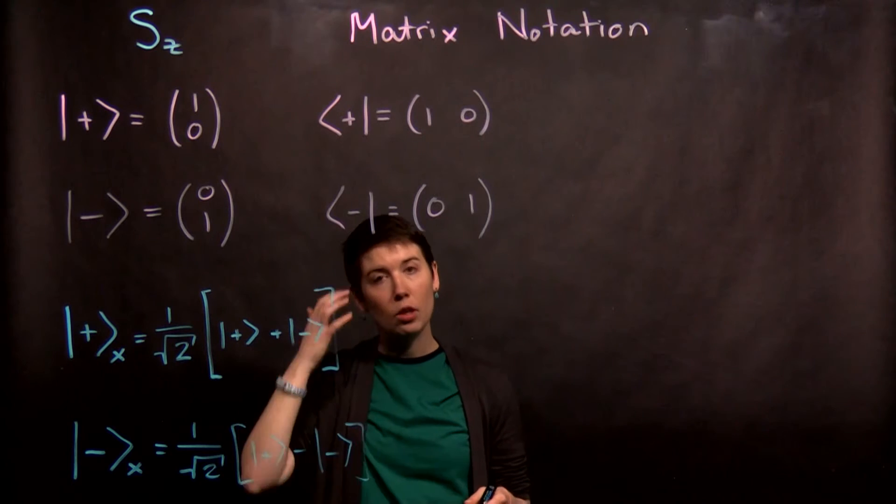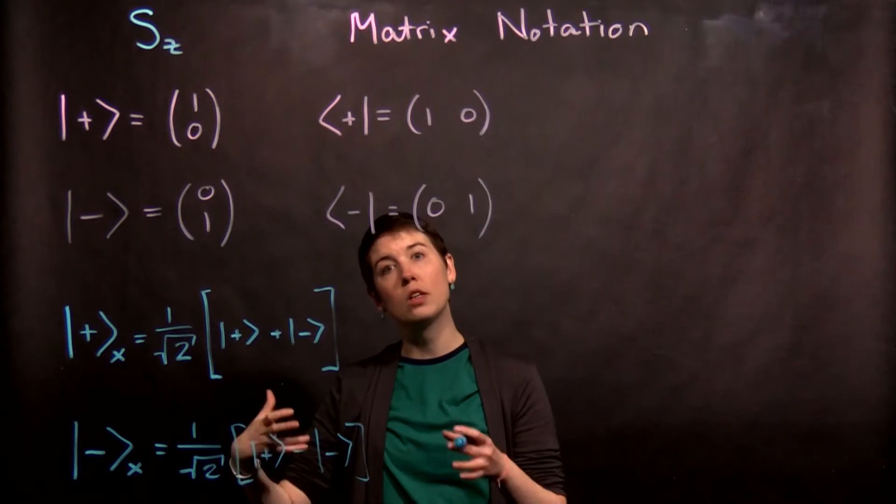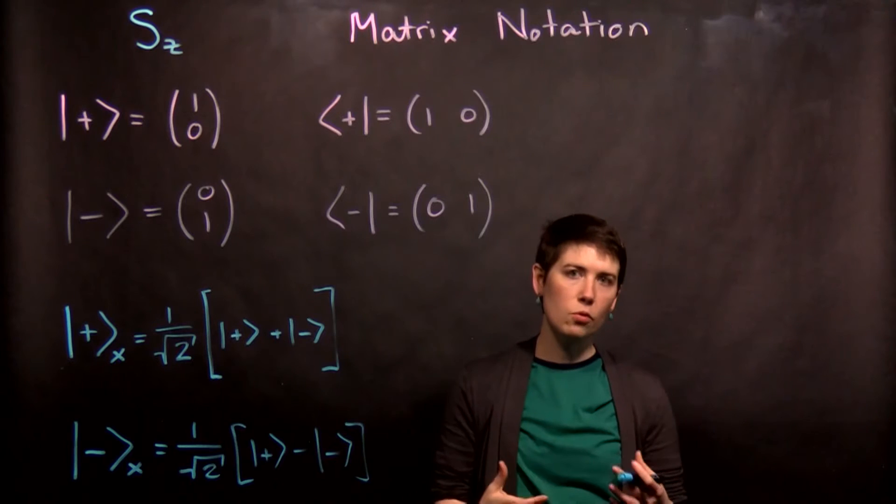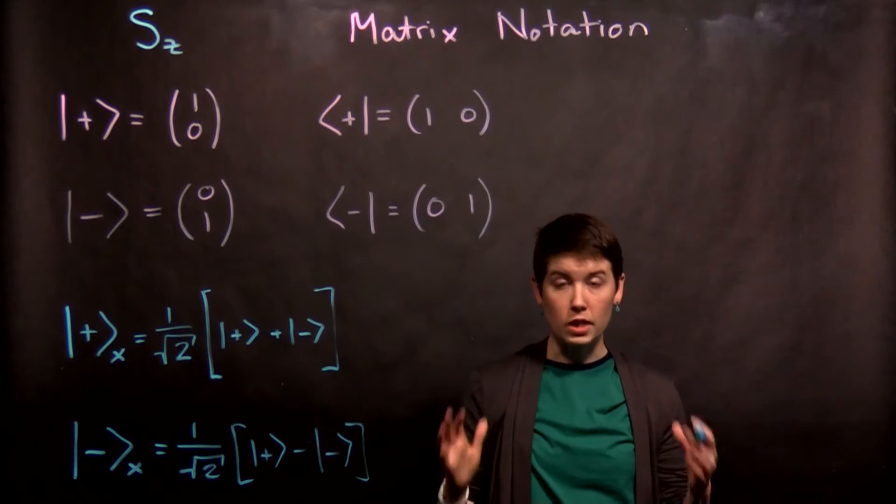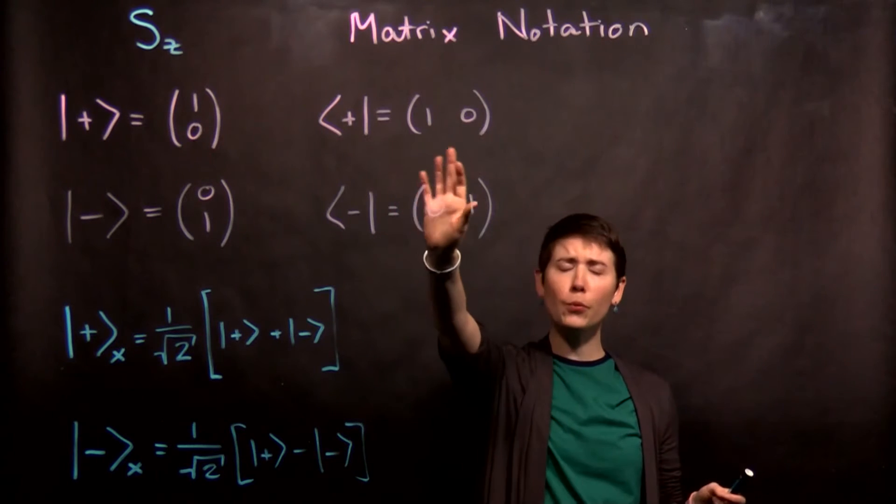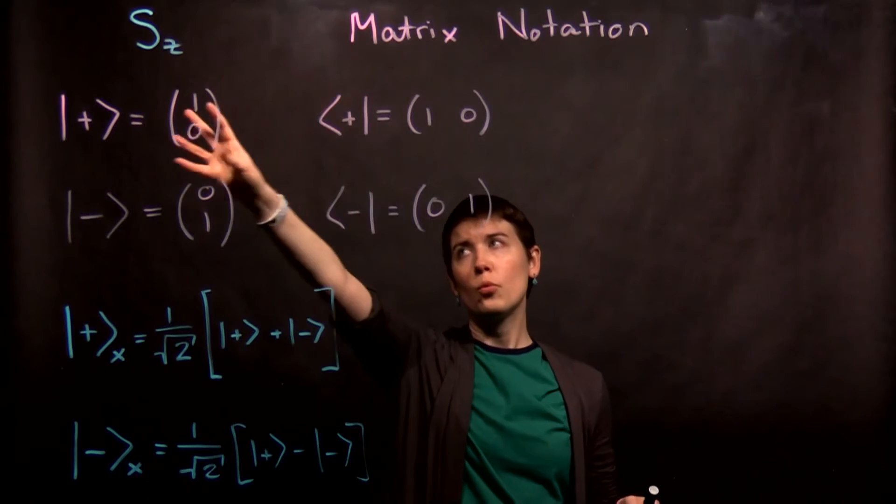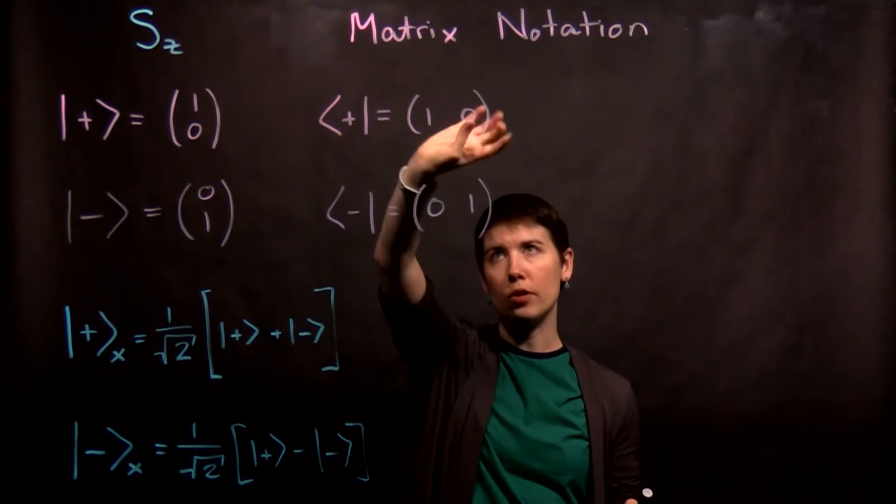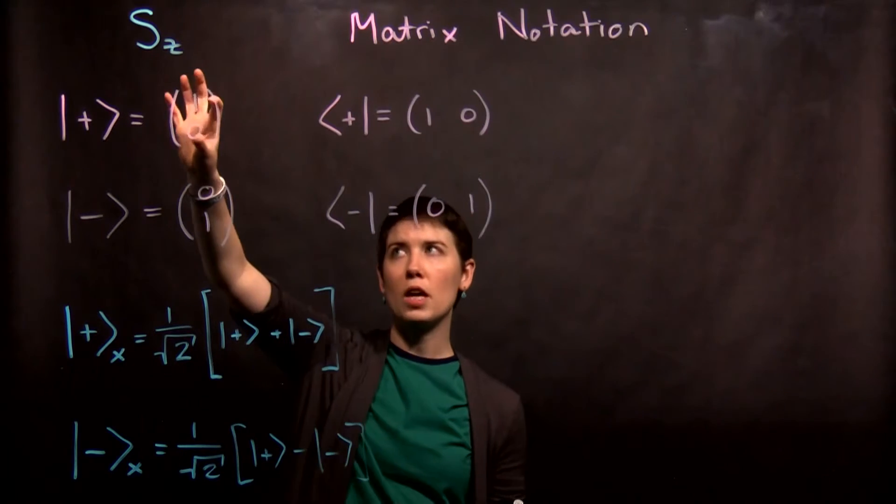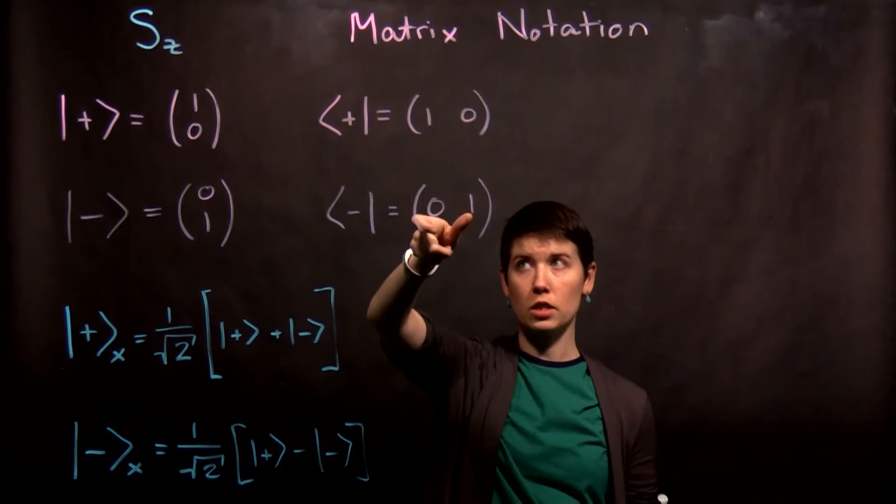Now one caveat is we have to think about what it means to then have the corresponding bra state. I've said before that these are different vector spaces, and when we write it in matrix notation this becomes more clear. That in fact we are taking the adjoint, we are transforming—we're going from a column vector to a row vector.